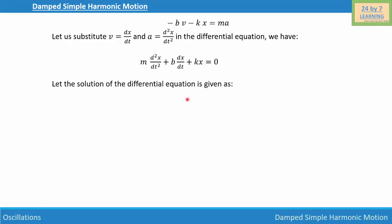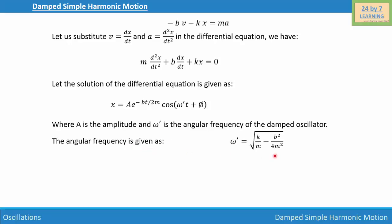Let the solution of the differential equation be given as: x = Ae^(-bt/2m)cos(ω't + φ), where A is the amplitude and ω' is the angular frequency of the damped oscillator. The angular frequency is given as: ω' = √(k/m - b²/4m²). This is the angular frequency of the damped oscillator.